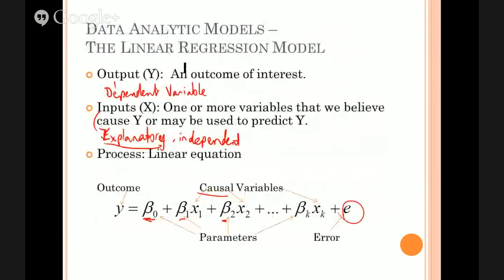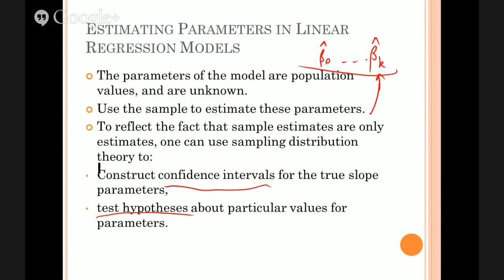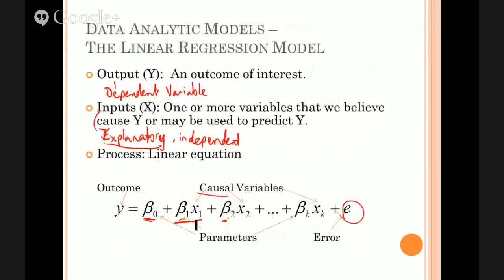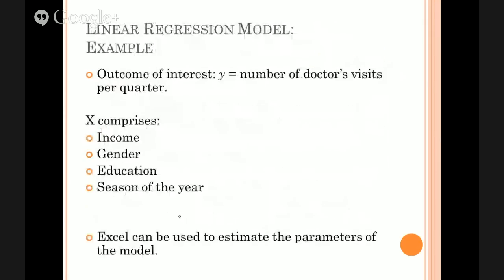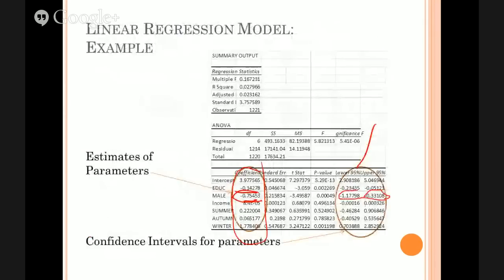Because if you go back to the model, if a particular value of one of these betas equals zero, then that X variable is no longer in the model. So if that number there is actually zero, then that variable drops out. So X1 is no longer a relevant variable in explaining y.